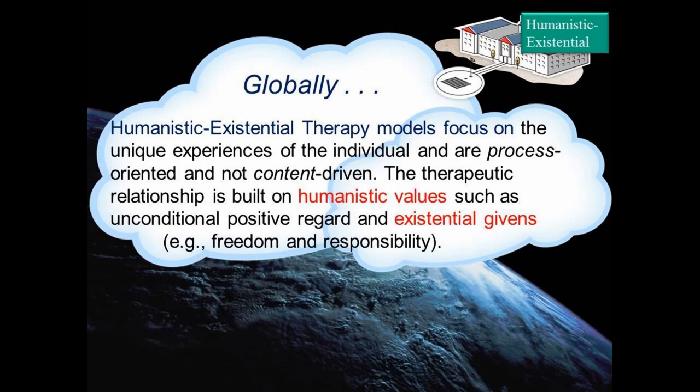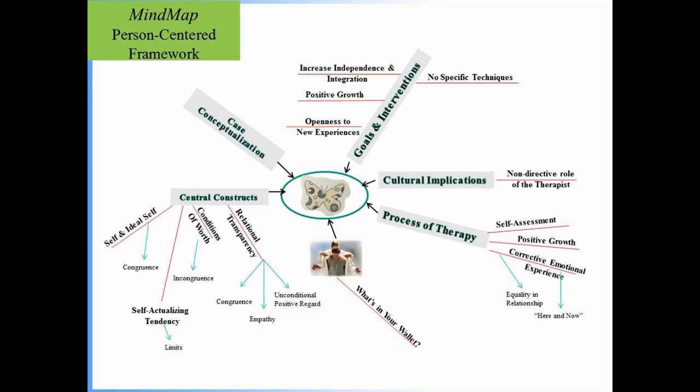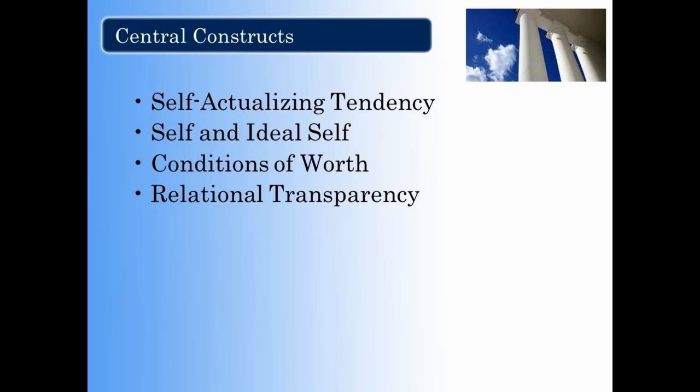We'll start with person-centered therapy, and here's the mind map to get a sense of its foundation. Please pause the video as needed to review. Now there are four central constructs to this model: self-actualizing tendency, self and ideal self, conditions of worth, and relational transparency.